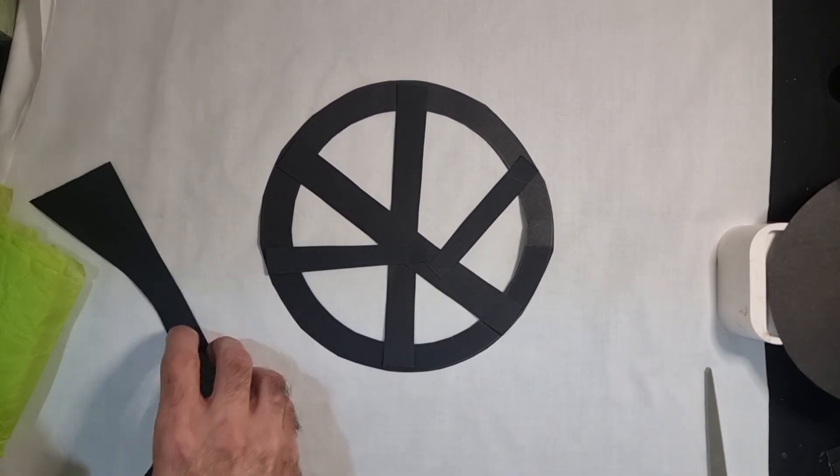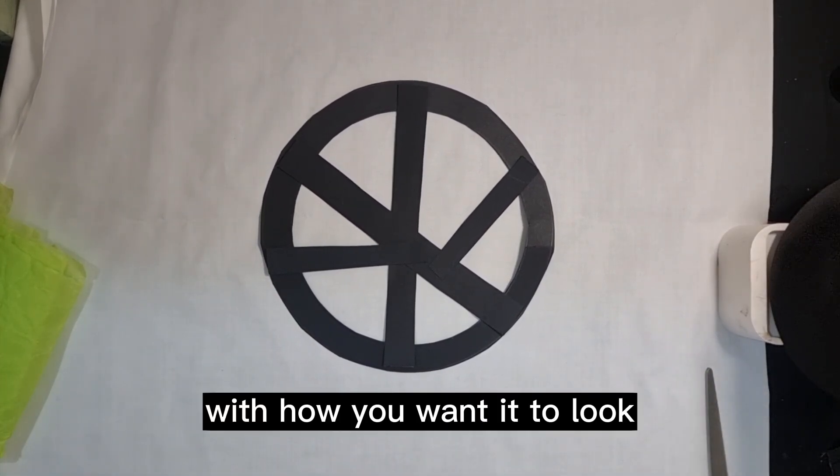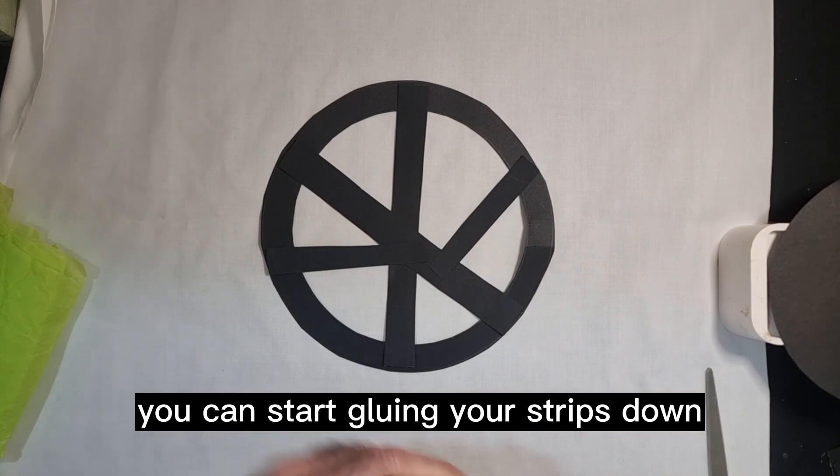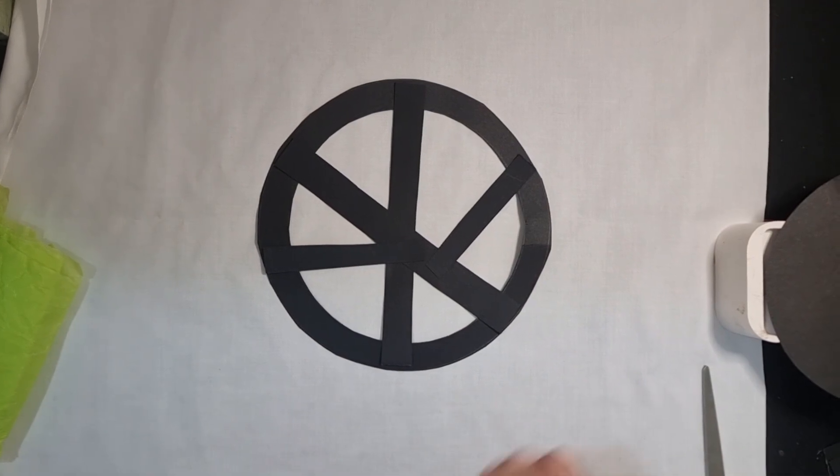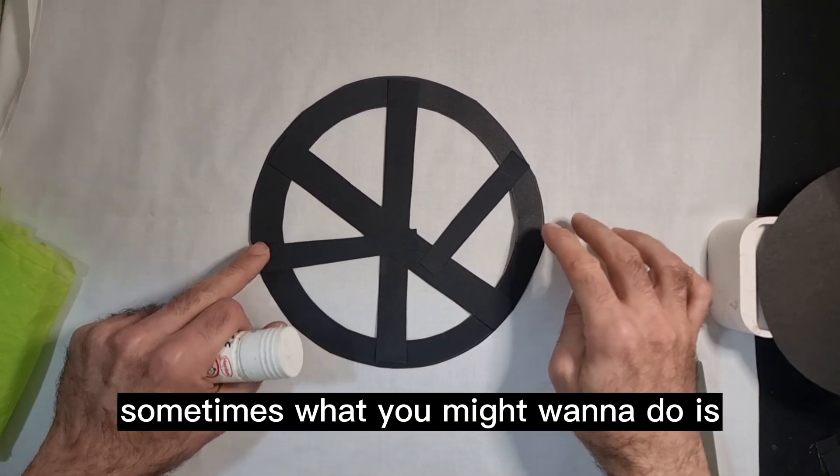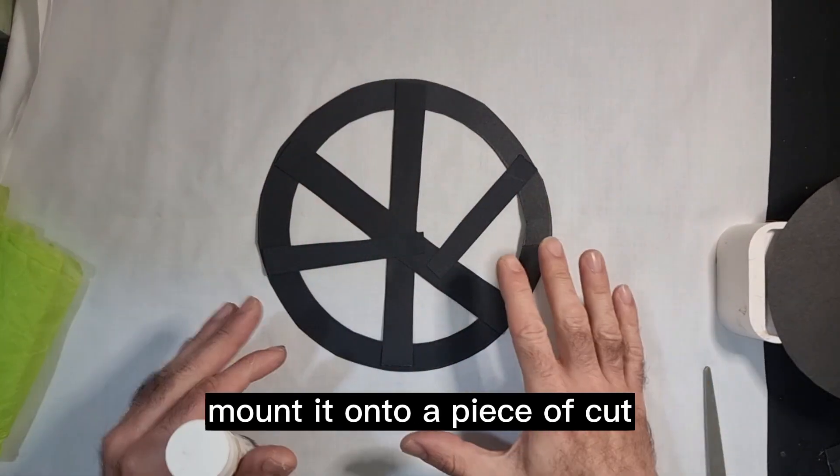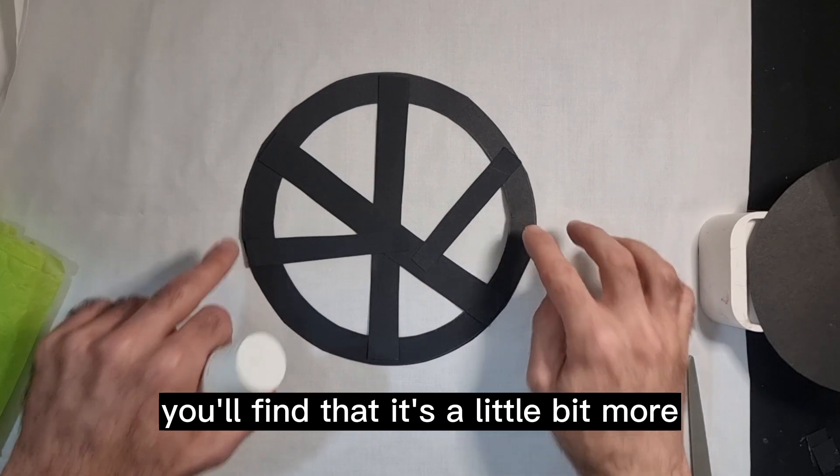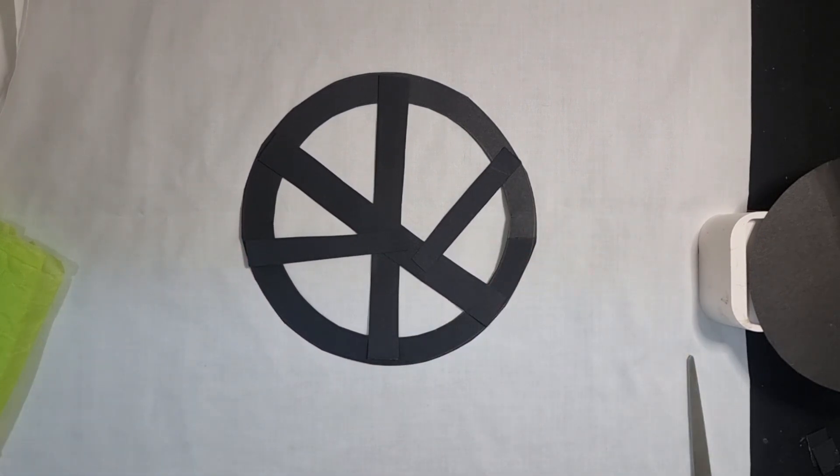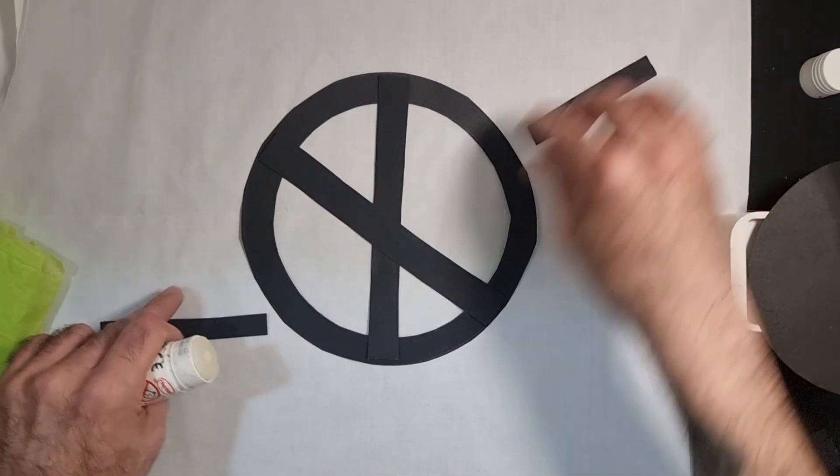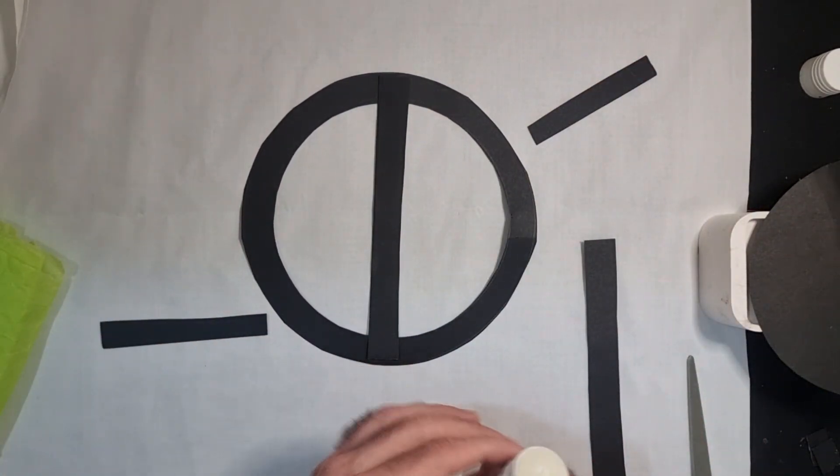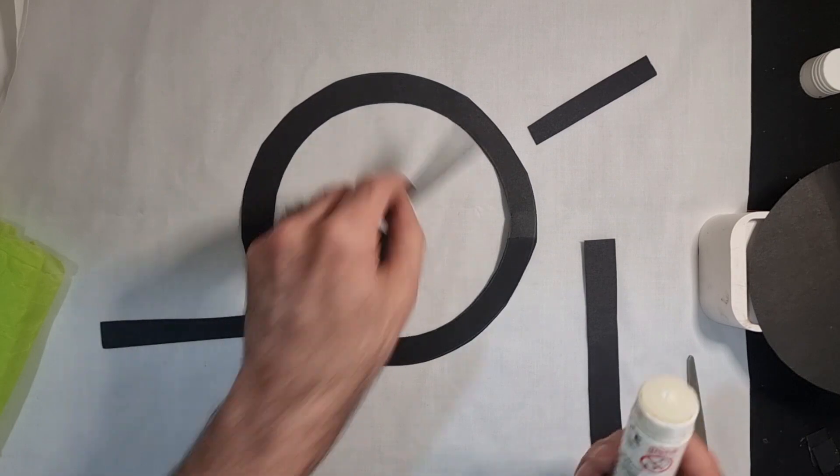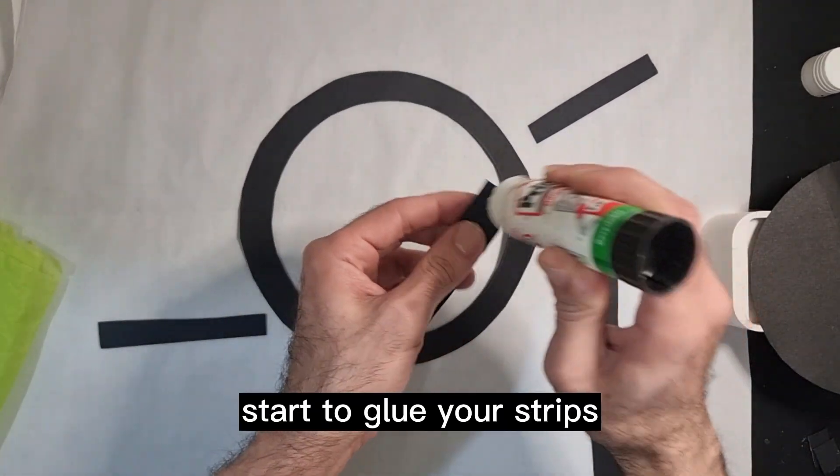Once you're happy with how you want it to look, you can start gluing your strips down. Probably best as well, sometimes what you might want to do is before you cut your circle out, mount it onto a piece of card and then cut your circles out. You'll find that it's a little bit more sturdier as well. Start to glue your strips.